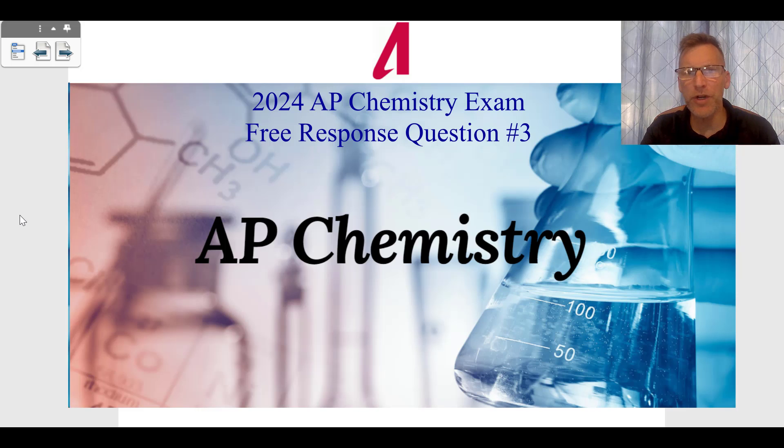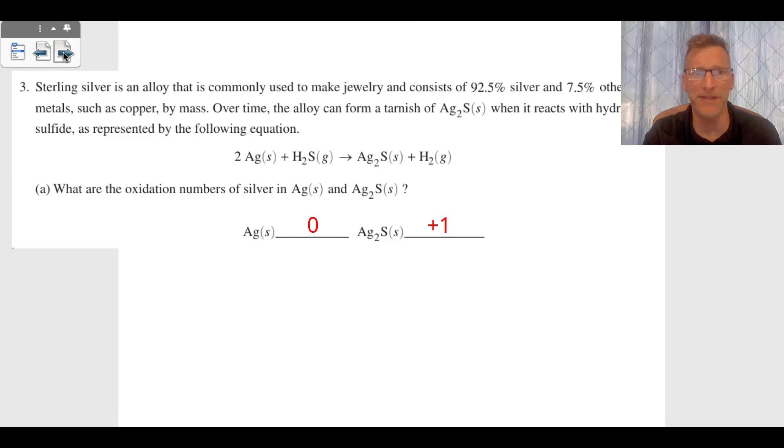Hey, this is Mr. Aiden. This is the 2024 AP Chemistry exam free response question number three. This is the solution guide to the 2024 AP Chem exam, so let's get to question number three. Question number three starts with a question about silver.